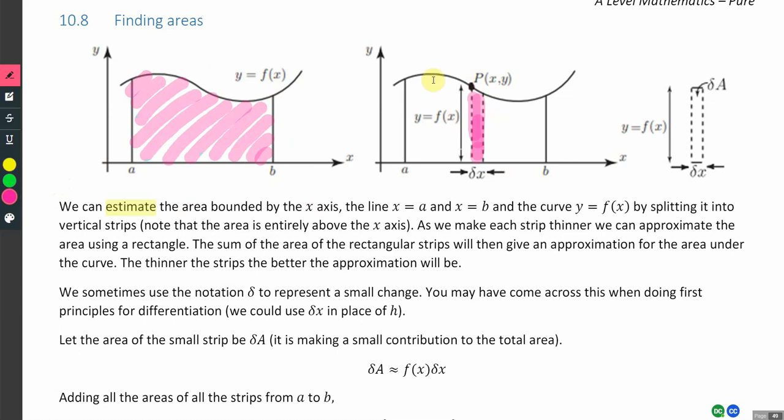There can be lots and lots of them. As we make each strip thinner, we can approximate the area using a rectangle. So this strip, you could make it a trapezium if you want to, but we're saying here let's make it a rectangle. When it is very thin, the difference in area between a rectangle and the trapezium is going to be very small anyway.